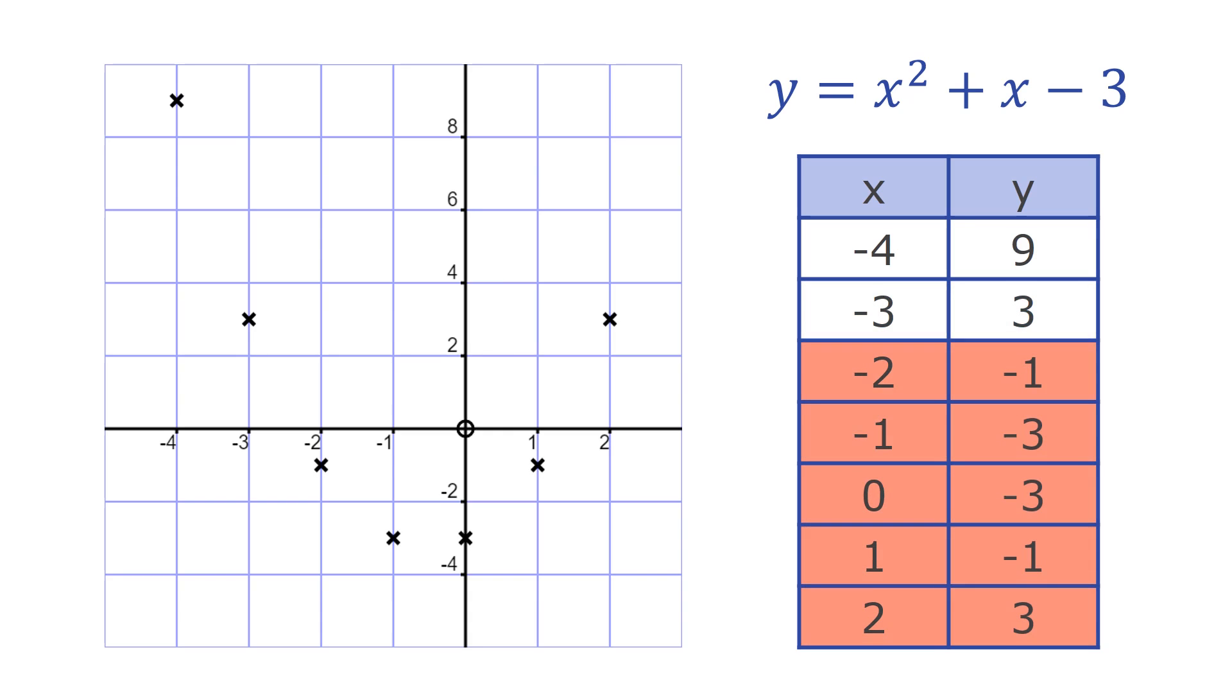If we repeat this for all other values of x, we see the shape of the graph. All we need to do now is draw a smooth curve through the points.